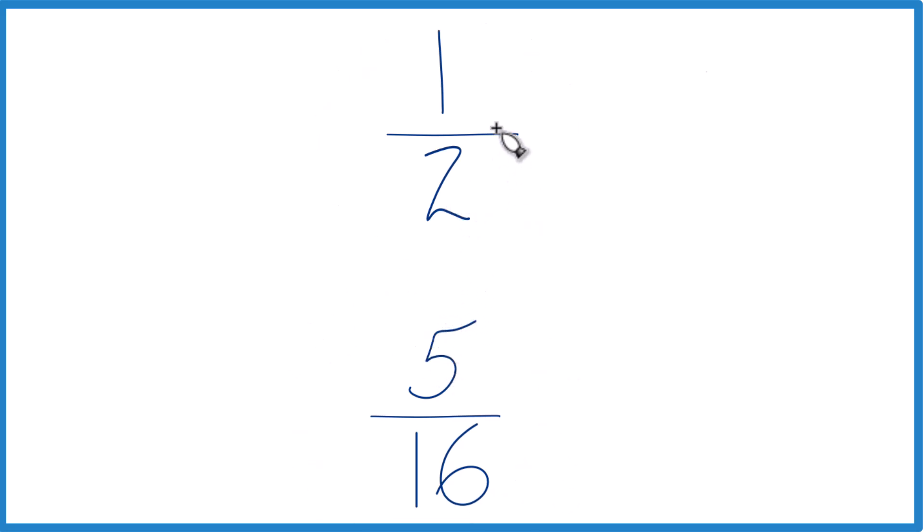So what you could do is you could just divide 1 by 2 in a calculator, get a decimal, then divide 5 by 16 and get a decimal, and you'll see that 1 half, that's the larger decimal. So the fraction 1 half is larger than 5 sixteenths.